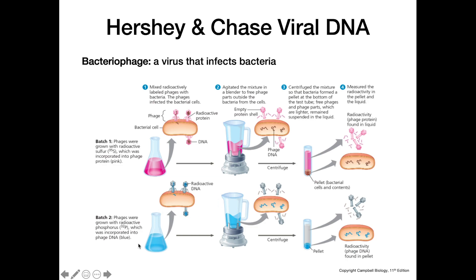In the DNA experiment, they did a very similar procedure but with radioactive phosphorus, which is important for the sugar-phosphate backbone in DNA. They tagged the DNA, allowed it to infect bacteria, blended it to remove protein coats, and centrifuged again. This time, the radioactivity was found in the pellet rather than the supernatant, meaning the DNA had made it inside the bacterial cells. This is how they determined that it was the DNA being injected into bacterial cells that was responsible for causing viral infection, not the proteins, which remained outside in the supernatant.